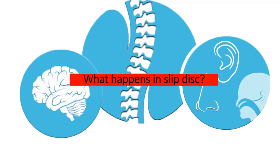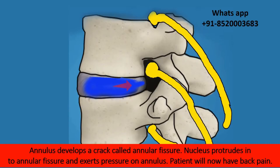So what happens in a slipped disc? The annulus develops a crack called an annular fissure, and the nucleus protrudes into the annular fissure and exerts pressure on it. Because of this crack, the patient will have back pain.